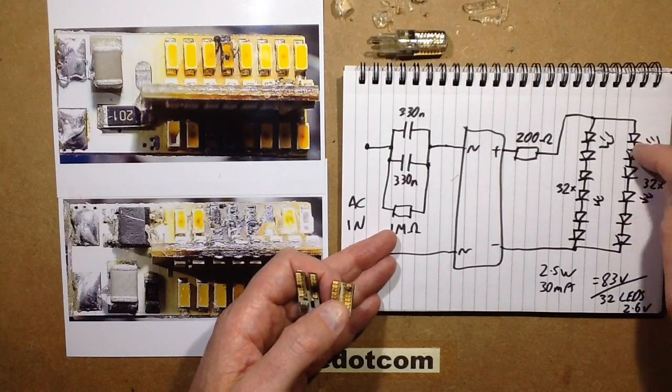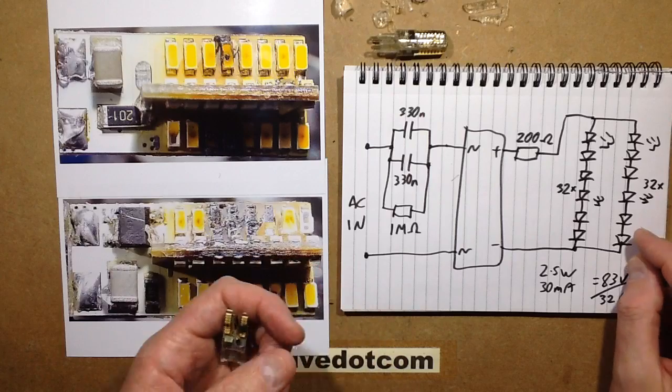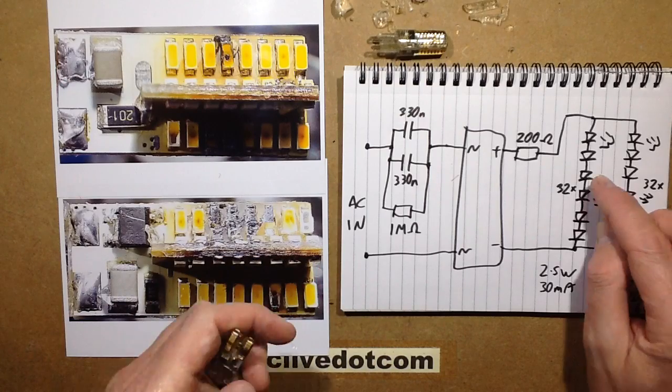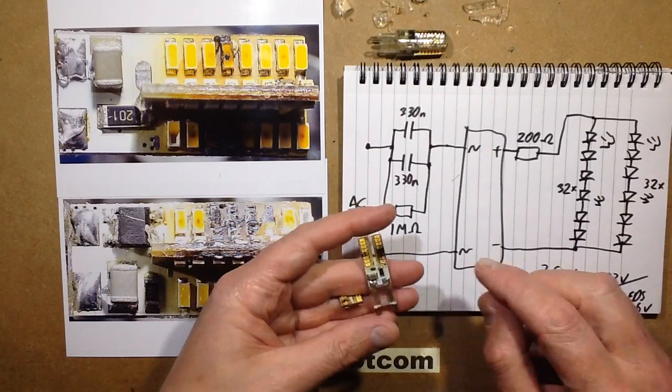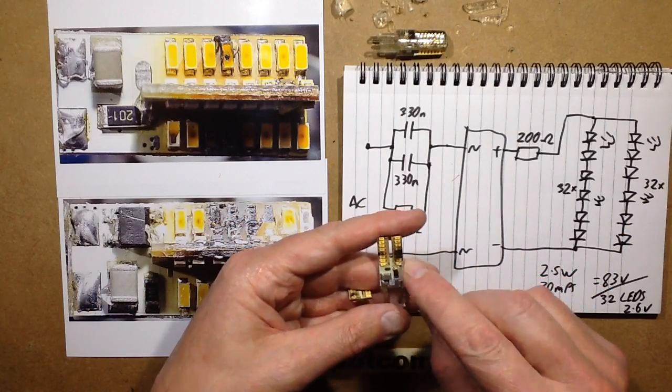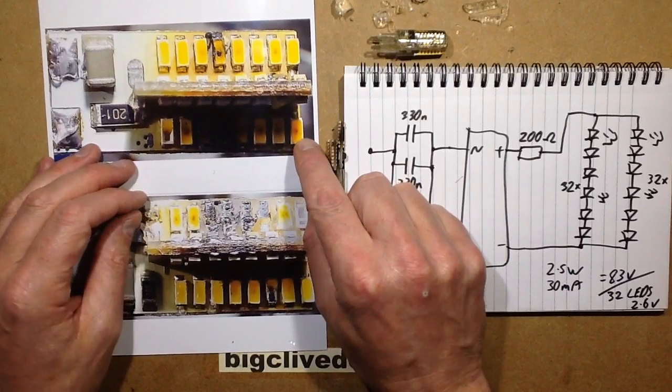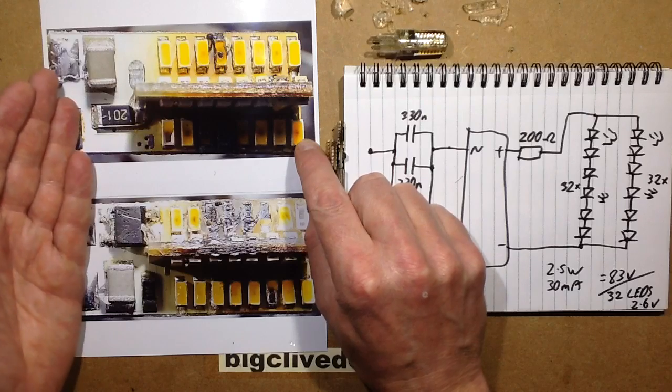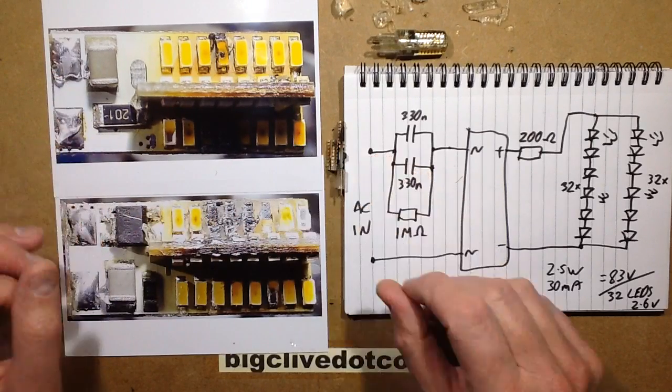The current would double through the other set because that would be the only section of LEDs in line. Meanwhile that LED would have seen about the 83 volts across it, which wouldn't have been much of an issue. They all have got this little black dot of death in them. That's when the LED chip goes open circuit inside, the bond detaches or something, and then it just starts arcing over and it makes that distinctive black dot.